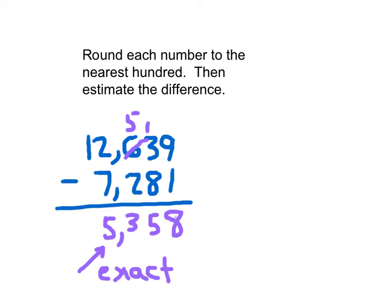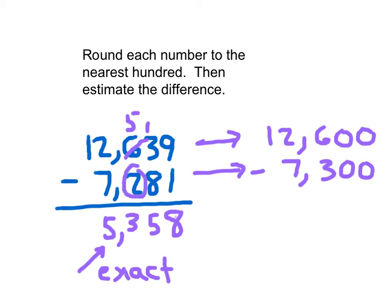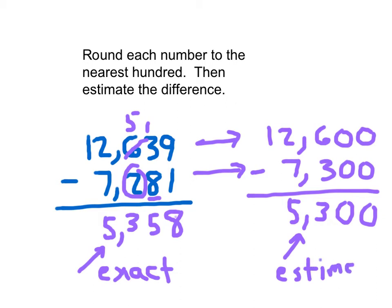Some students, when they're wanting to estimate the difference, will want to take this exact answer and just round it. You may not do that. So don't make that mistake. It says to round each number to the nearest hundred. So 12,600 minus 7,300. That 8 is between 5 and 9. That's why the 2 goes up there. And then we subtract those two numbers. 0, 0. 6 minus 3 is 3. And 12 minus 7 is 5. So 5,300 is our estimate for the exact answer, 5,358. They're close enough together where we feel that our answer is reasonable.